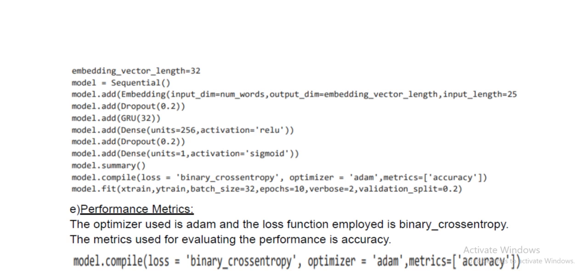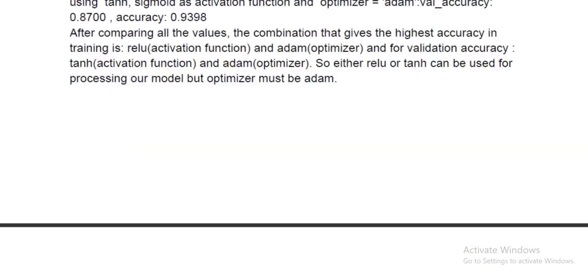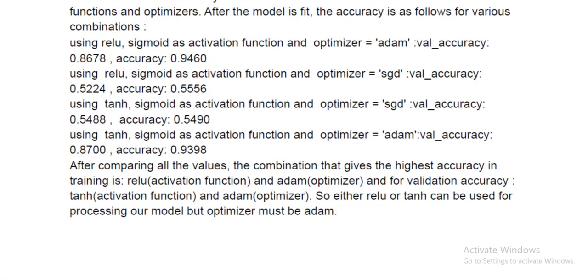As you can see, once you implement this particular model, I'm getting a validation accuracy of 86% and training accuracy of 94% when using relu and sigmoid. When I check it with tanh and sigmoid, it has got 87% validation accuracy and 93% training accuracy. When you compare these results with LSTM, I could see the performance is a bit increased in GRU.